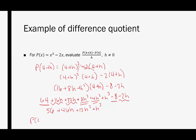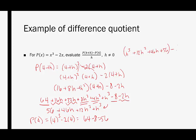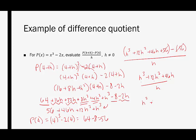Now I need to do p of 4. That's 4 cubed minus 2 times 4, which is 64 minus 8, equaling 56. Now we bring the numerator back together: h cubed plus 12h squared plus 46h plus 56, minus 56, all divided by h. The 56's cancel, leaving h cubed plus 12h squared plus 46h, divided by h. All four terms have a factor of h, so dividing out h leaves us with h squared plus 12h plus 46 as our final difference quotient.